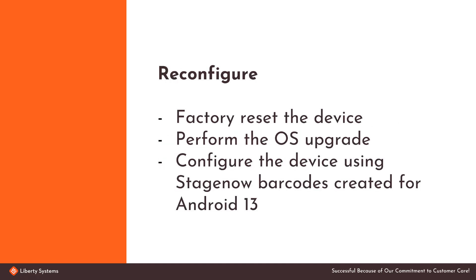Our recommended method is to reconfigure the devices. The steps to do this are to do a factory reset of the device, perform the OS upgrade, and then configure the device. Configuring the device can be done using the normal processes you would use, such as a StageNow barcode, enrolling in an MDM, or a manual setup. Just remember, if using StageNow, to use the new barcode format.